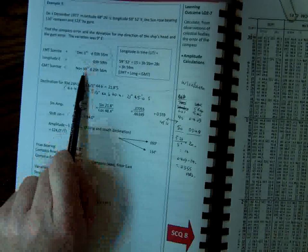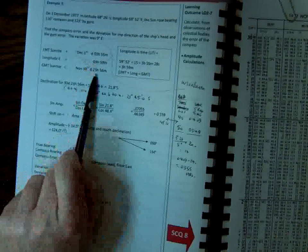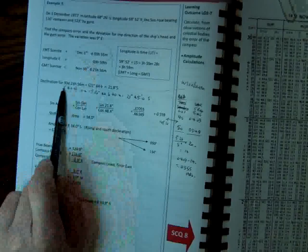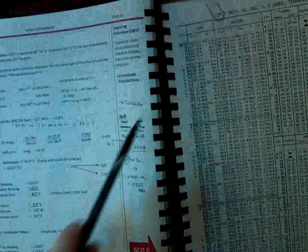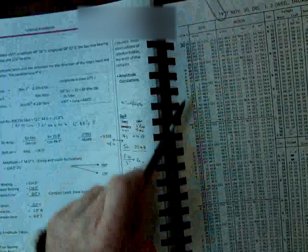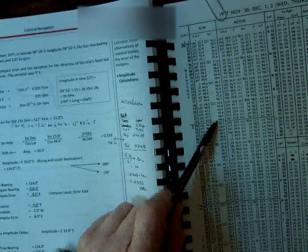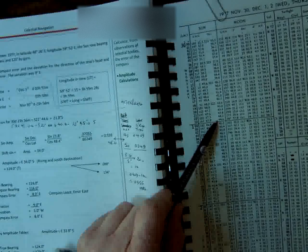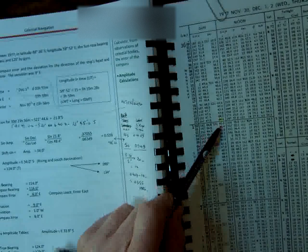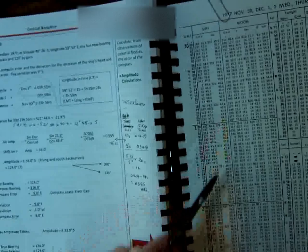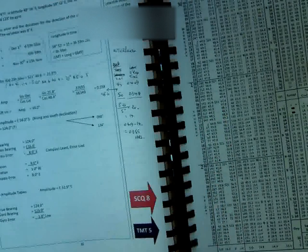So what's happened now, we'll need to look in the tables on November the 30th at 2356 for the declination of the Sun. So there's the 30th, 23 hours, we've got 21 degrees 44.6 south. And as you can see, the declination is rising. Our D correction at the bottom is 0.4.